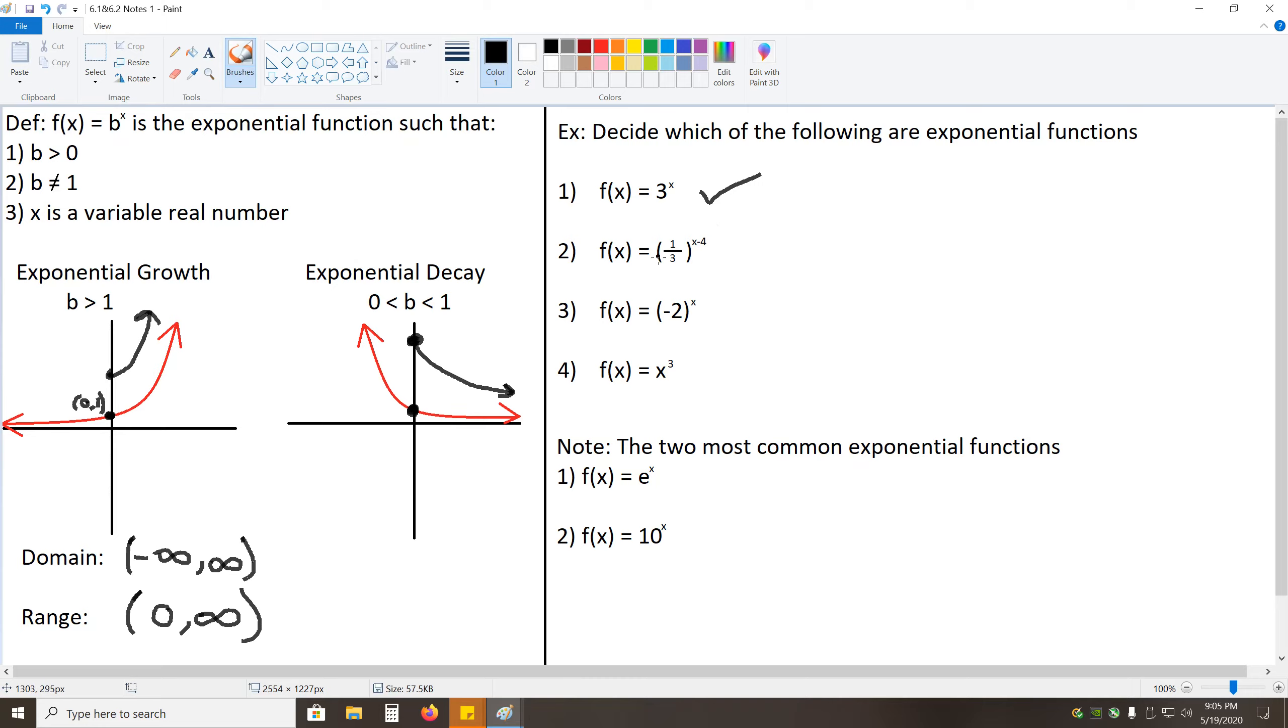Number two, again, the constant satisfies its rules, and the exponent does represent a variable. x minus 4 is just some unknown number, so again, this is an exponential function. From here, we have negative 2 to the x. Negative 2 is less than zero, so even though it is a constant being raised to a variable, it is an improper constant that was chosen, this is not an exponential function. And finally, x to the third power, this is not an exponential function, this is a power function. This is just x being raised to a constant, which is the opposite of what we want.